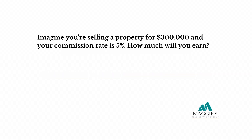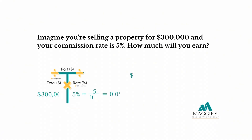Imagine you're selling a property for $300,000 and your commission rate is 5%. How much will you earn? Using the t-chart, we place the sales price of $300,000 in the total column and the 5% in the percent column. Change the percent to a decimal by dividing by 100, so that equals 0.05. Now multiply: $300,000 times 0.05 gives you a commission of $15,000.